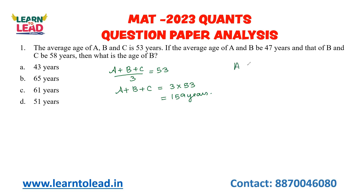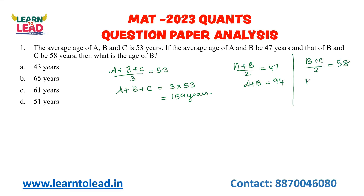Next, if the average age of A and B is 47 years, then the total age of A and B is 94 years. And that of B and C is 58 years, so the total age of B and C is 58 into 2, which is 116. They are asking: what is the age of C?